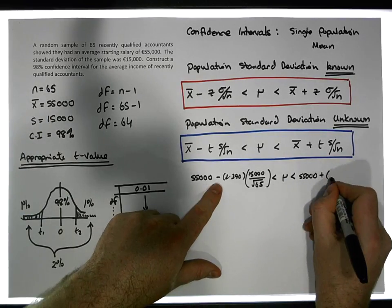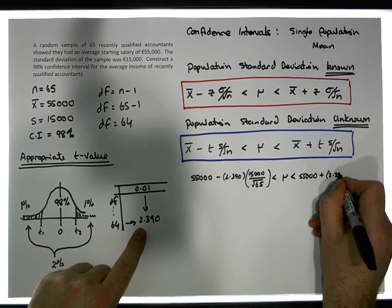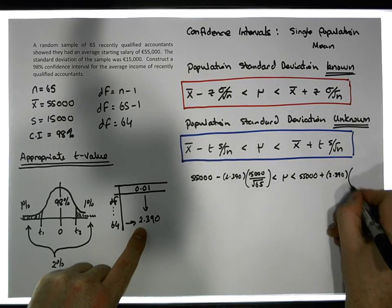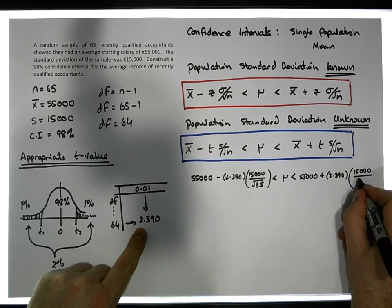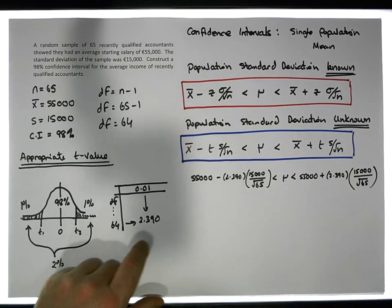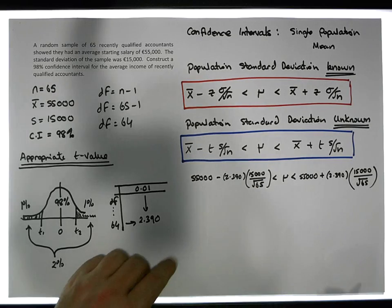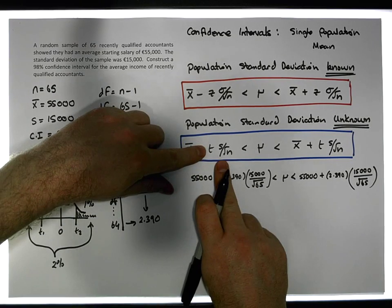Plus the t-value of 2.390 times the standard deviation of 15,000, divided by the square root of 65. Let's figure this out. We have this factor here and also over here, so let's just calculate this factor.